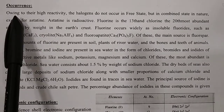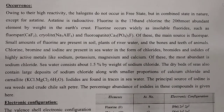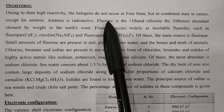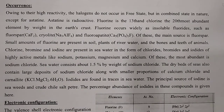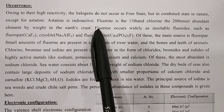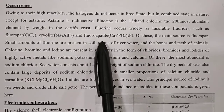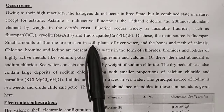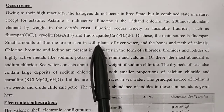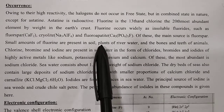Occurrences: Owing to their reactivity, the halogens do not occur in the free state but in the combined state in nature, except for astatine, which is radioactive. Fluorine is the 13th and chlorine is the 20th most abundant element by weight in the earth's crust. Fluorine occurs widely as insoluble fluorides such as feldspar, cryolite, and fluoroapatite. Of these, the main source is fluorspar. Small amounts of fluorine are also present in soil, plant matter, river water, and the bones and teeth of animals.